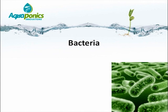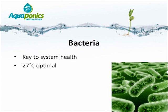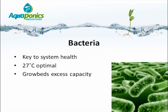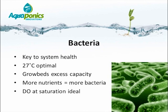The bacteria are the key to the health of your system. Their optimal growth occurs at a temperature of about 27 degrees Celsius. When we design an aquaponics system, we always ensure that the biofilter or grow beds exceed the capacity requirement for the bacteria. In an ebb and flow system, bacteria are responsible not only for breaking down ammonia but also the solids produced by the fish. More nutrients require more bacteria, and dissolved oxygen levels should remain saturated at all times for optimal bacterial performance.